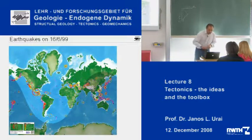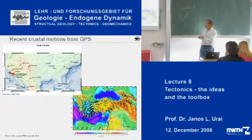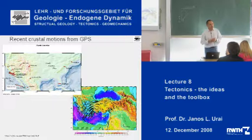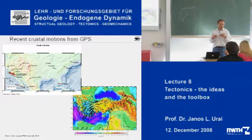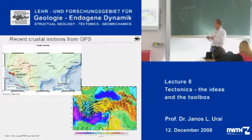Here is an example. One is in the Aegean Sea — this is Greece here, this is Northern Africa, this is Turkey — and these black lines show us the velocity field. At every point it shows you the velocity of the crust, of the Earth's surface, at that particular point.